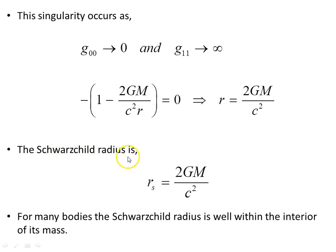Now this is called the Schwarzschild radius, this particular radius rs, and that's 2GM over c squared. Now for many bodies, the Schwarzschild radius is well within the interior of its mass. We'll have a look at the sun as an example of that.